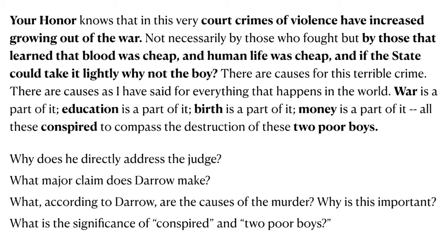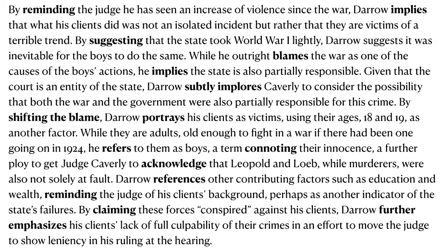Keep in mind that his clients have already pled guilty, so if he's suggesting there are other causes, there's a reason for this — and that's absolutely crucial to his defense. A couple of words I felt were significant: the first is 'conspired' — what is the significance of that word, what is its connotation? He also refers to them as 'two poor boys.' What is the significance of 'poor' there, and also the word 'boys'? Remember, they're 18 and 19 years old — legally adults — but he's referring to them as boys. Why does that matter?